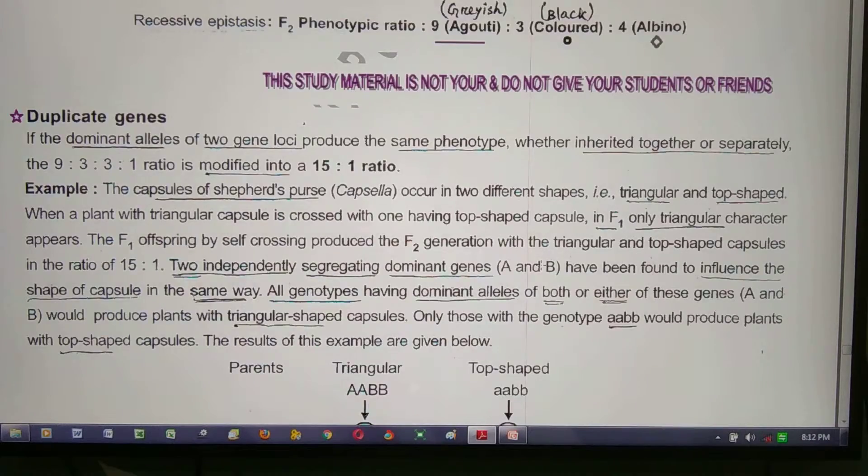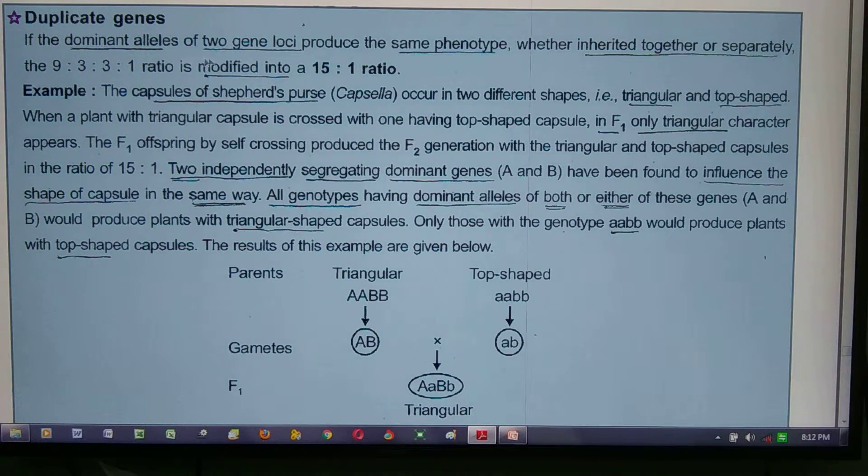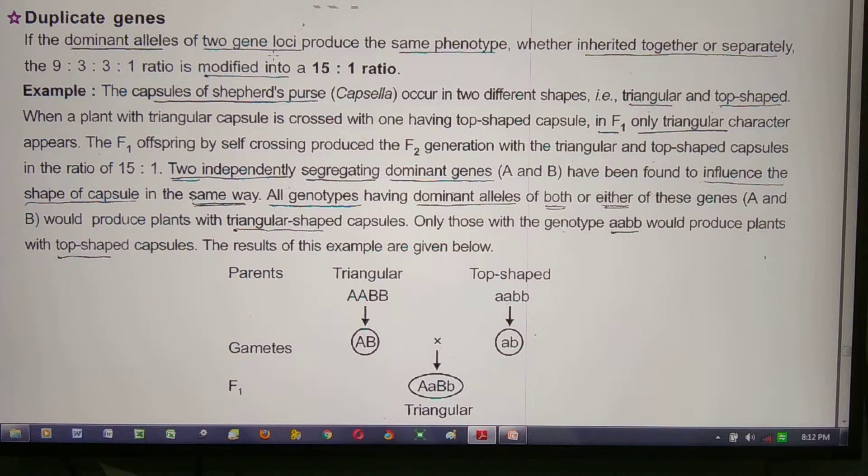Next, duplicate genes. If the dominant alleles of two gene loci produce the same phenotype, whether inherited together or separately.